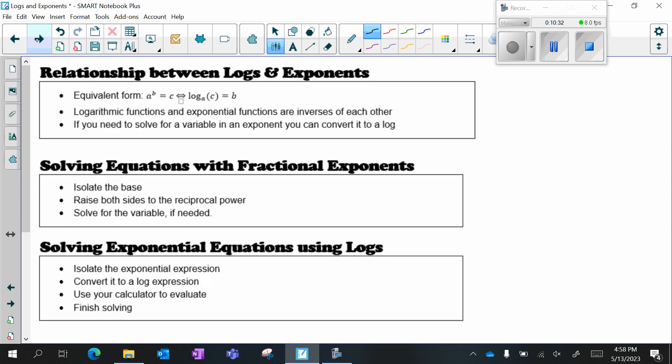So we have exponentials and logs, and in order to convert between them, we use keep the base and switch. So for example, if I had something like 5 to the X equals 27, that would be log. I'm going to keep the base, so log base 5 and switch. I'm going to put the 27 next to it and the X on the other side. And in order to put something like this in my calculator, I would use alpha window 5.